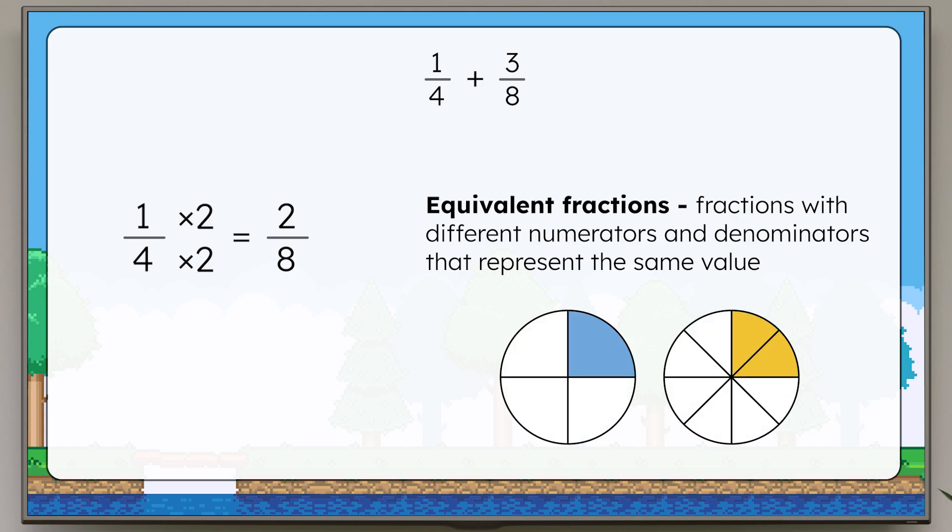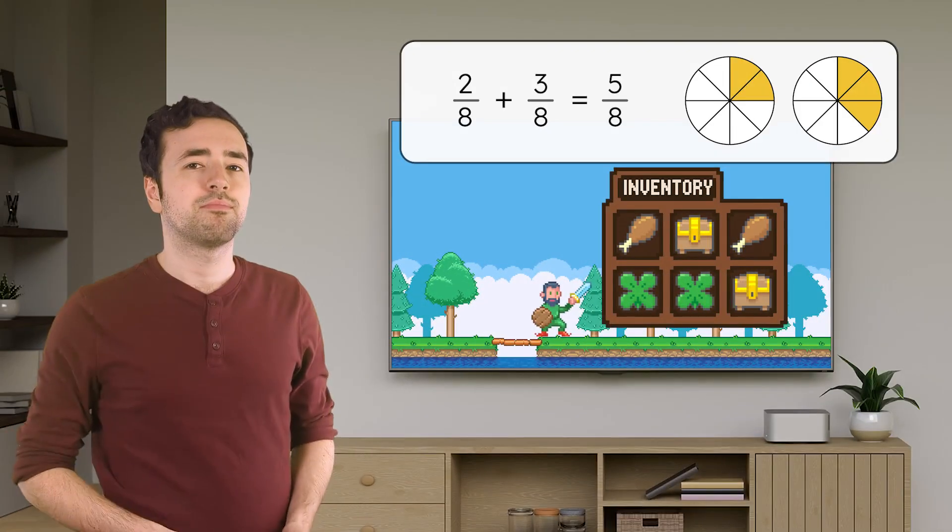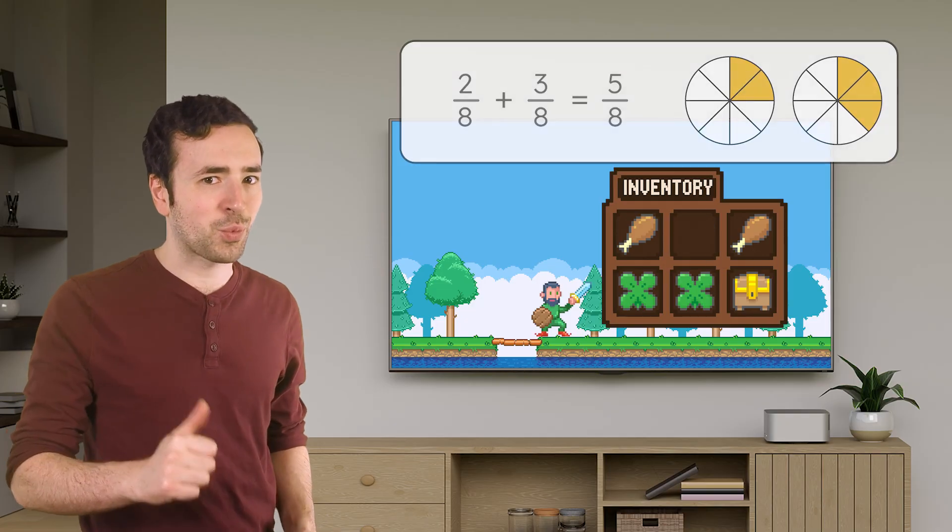Now we have two-eighths plus three-eighths, and we know how to do that. Pause here to solve in your guided notes. Two-eighths plus three-eighths equals five-eighths. Nice work. Combining those treasure chests gave me enough space in my inventory to pick up this shield boost.